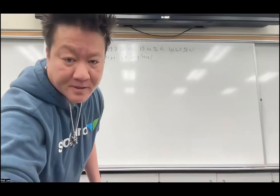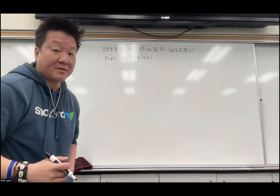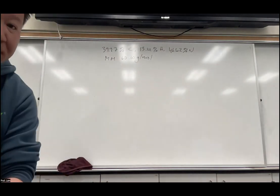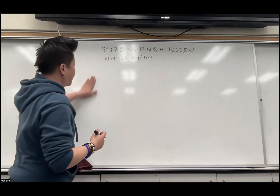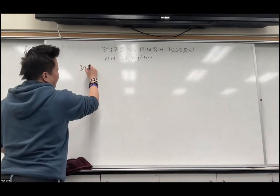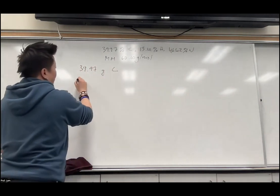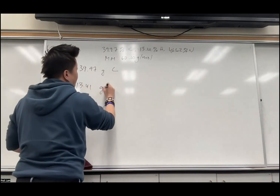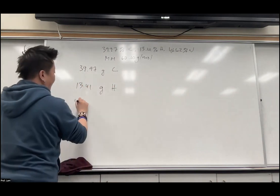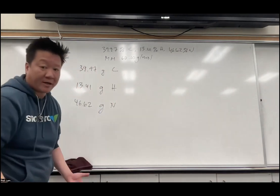Remember our steps. Step one: assume a 100-gram sample. So all these percentages go straight into grams — 39.97 grams of carbon, 13.41 grams of hydrogen, and 46.62 grams of nitrogen.